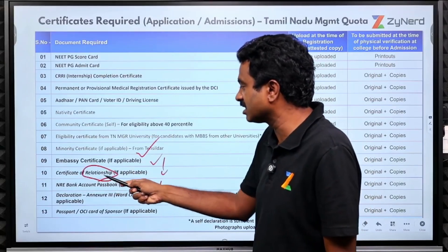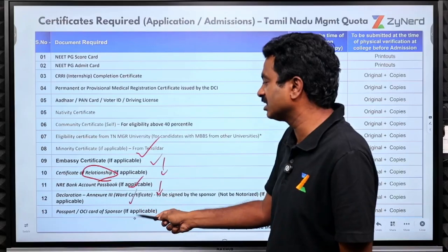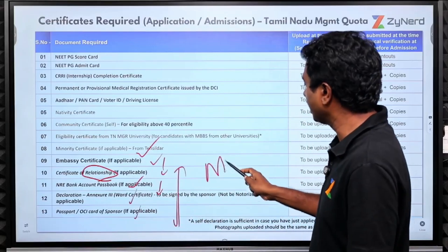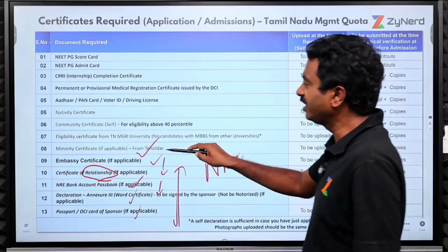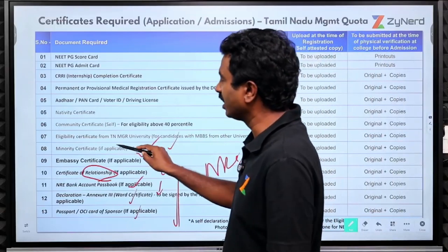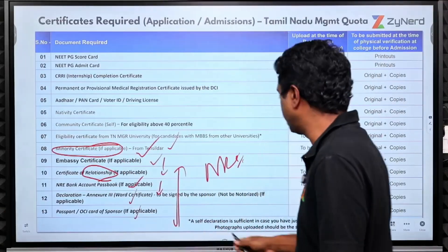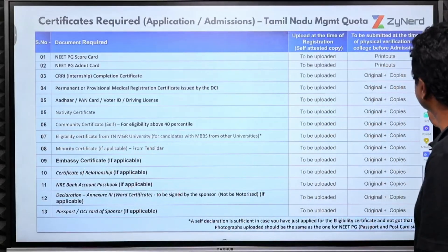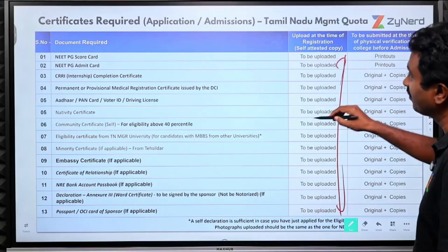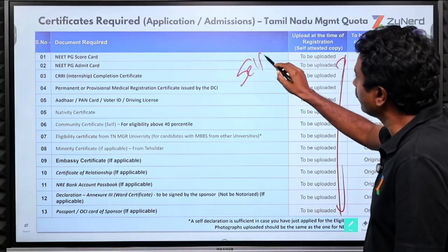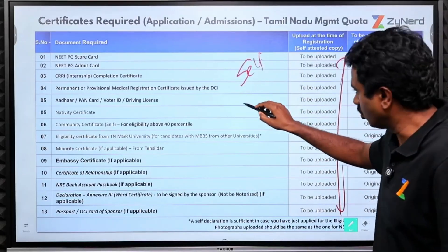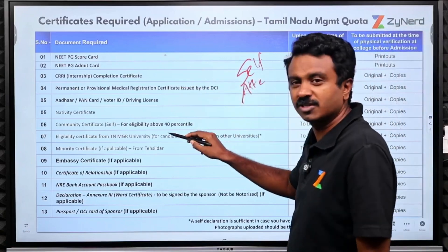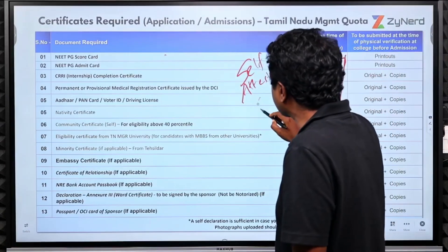NRI bank account declaration, passport, and OCI card are required for NRI candidates only. For others, linguistic minority or religious minority certificates, if applicable, must be obtained — the format is available in the prospectus. All these documents need to be uploaded as PDFs and should be self-attested. Do not attest the originals; take a printout or photocopy, attest it, then scan and upload.